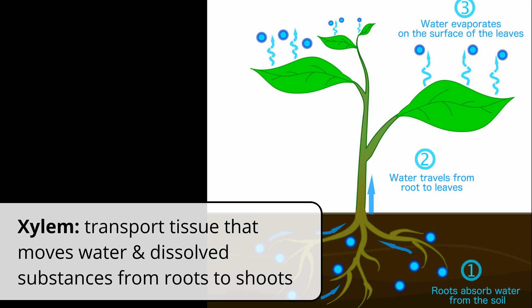Xylem is the transport tissue that moves water and dissolved minerals or nutrients from the roots to the top of a plant. There's only one direction, it's always from the roots to the top.